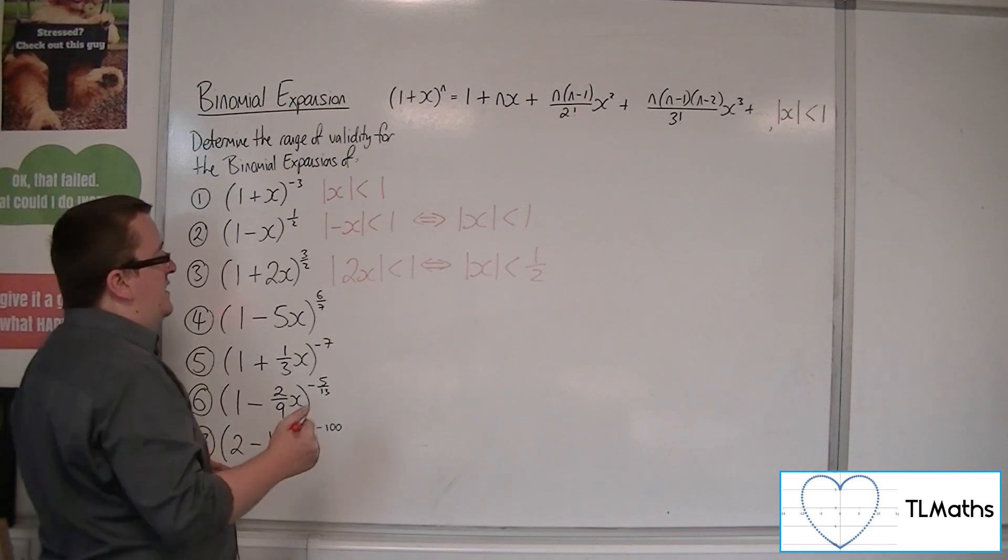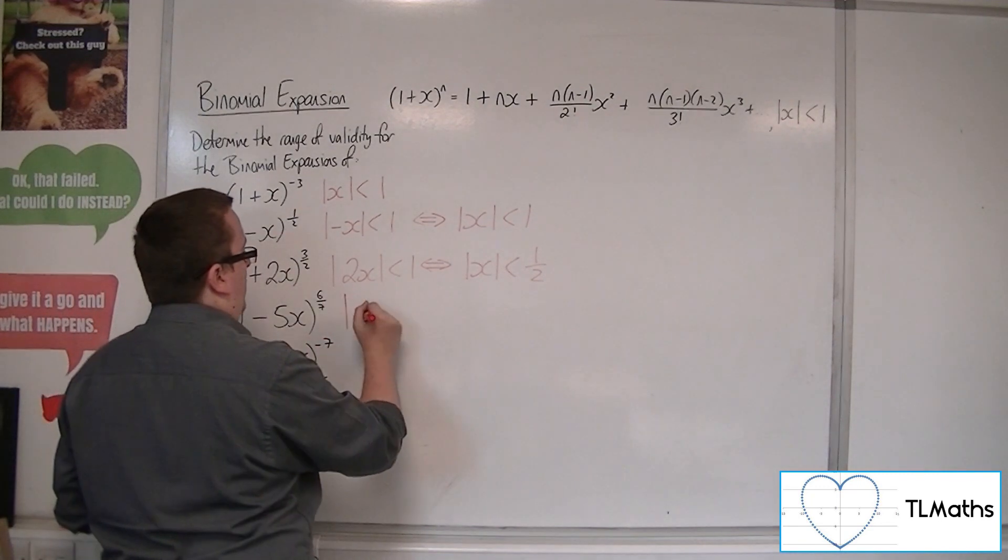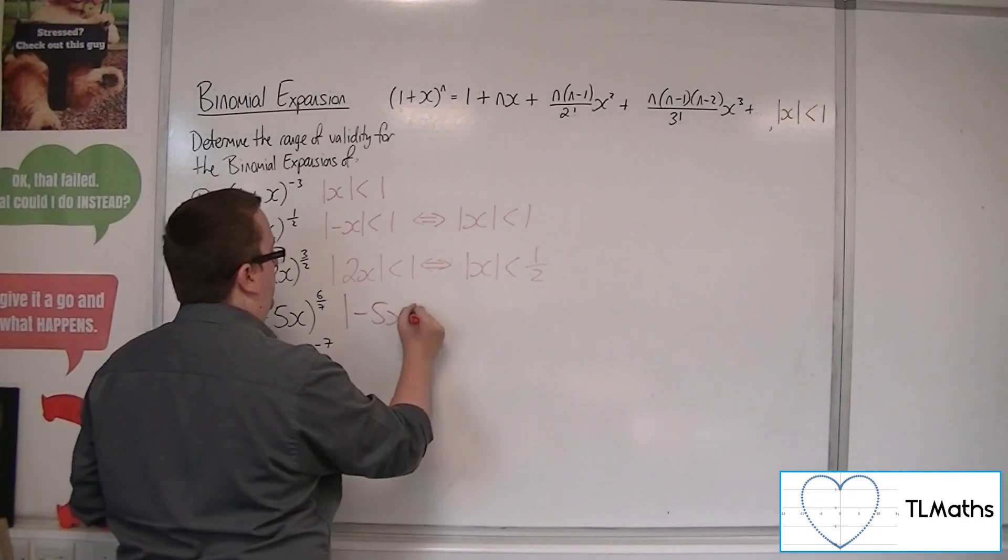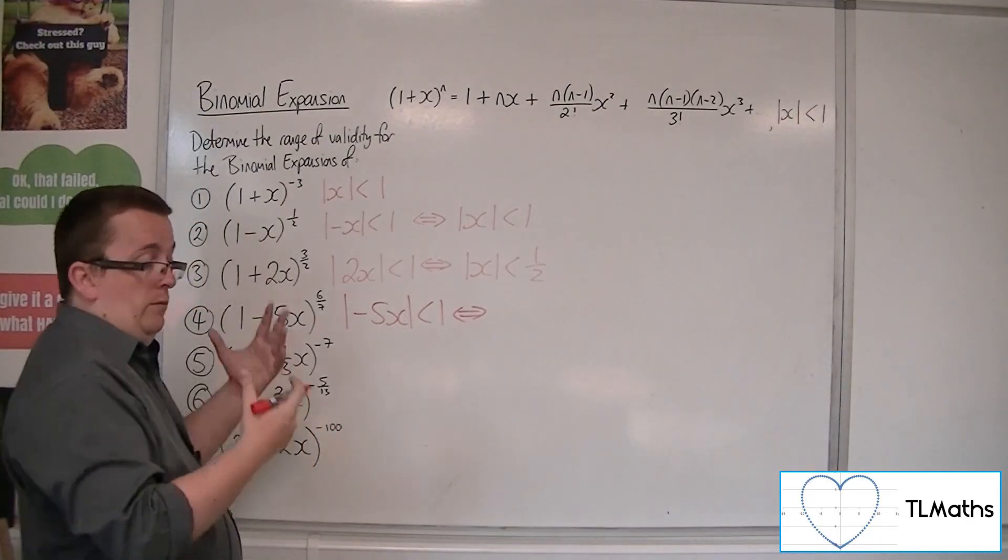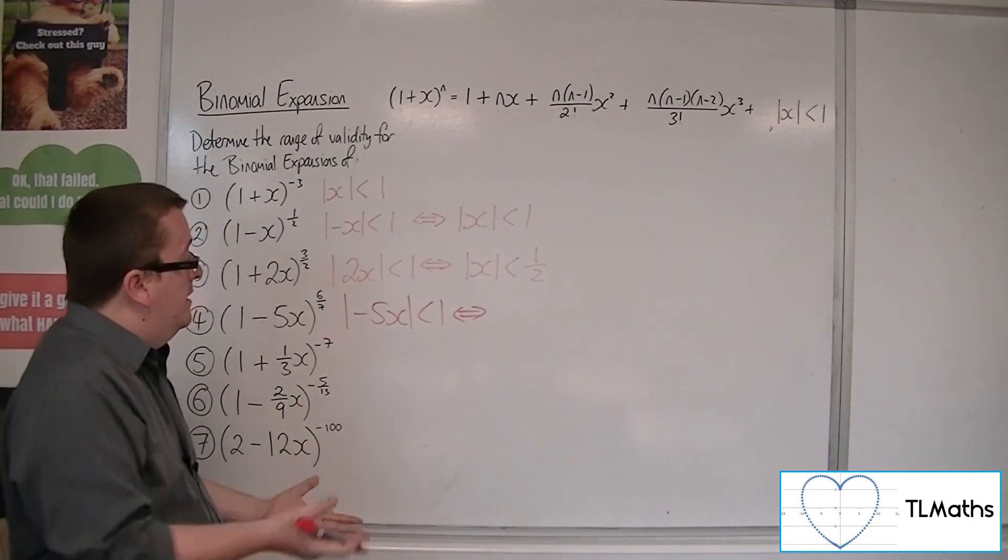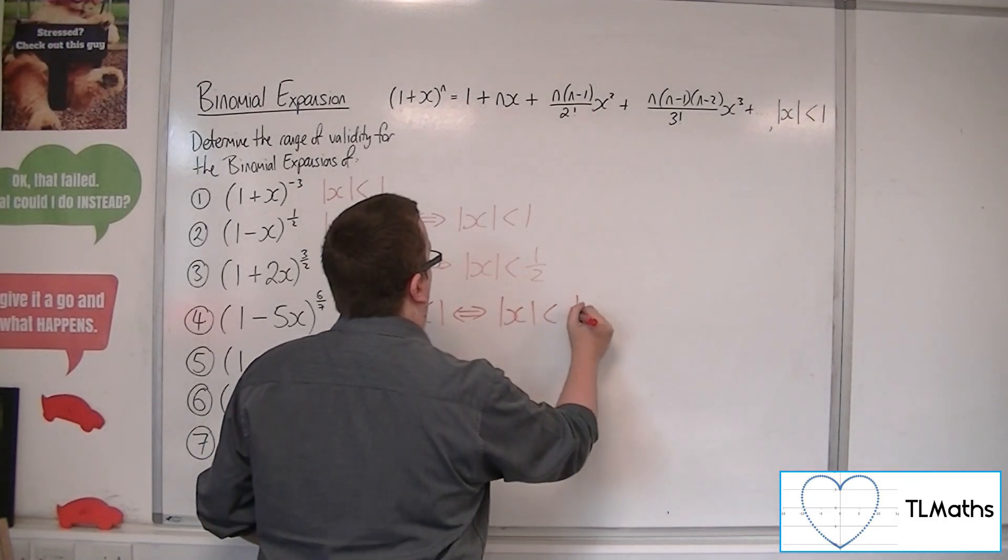Now, (1-5x)^(6/7). The 6/7 has nothing to do with it. Replace the x with -5x in the range of validity. Then divide both... well, the modulus sign takes care of the minus sign. Then divide both sides by 5. So |x| < 1/5.